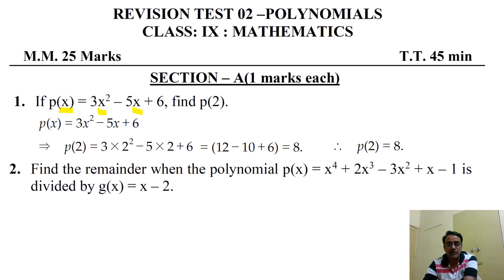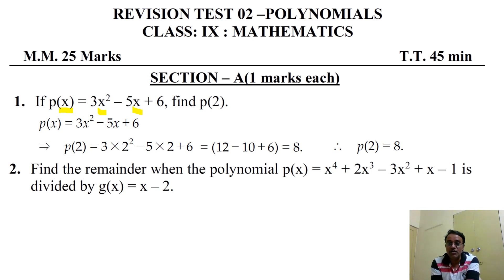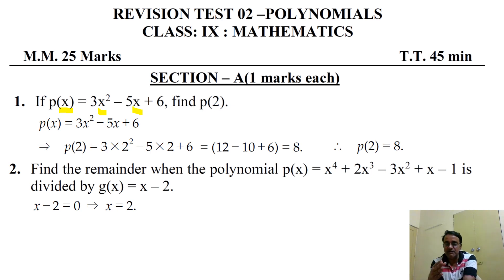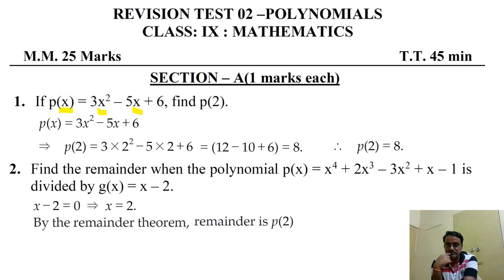Next question: find the remainder when p(x) = x⁴ + 2x³ - 3x² + x - 1 is divided by g(x) = x - 2. First we equate x - 2 = 0 to get x = 2. By the remainder theorem, the remainder equals p(2), so we will find p(2).